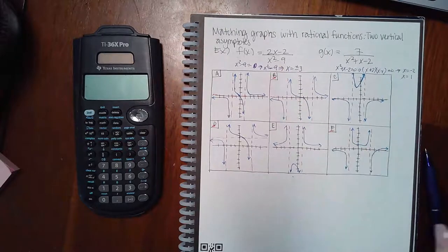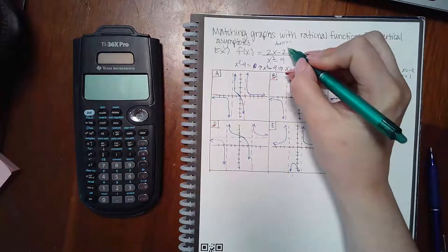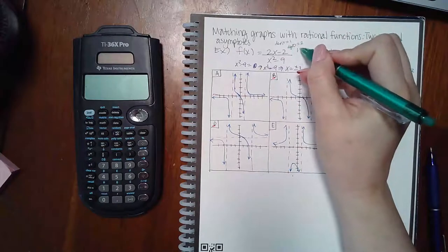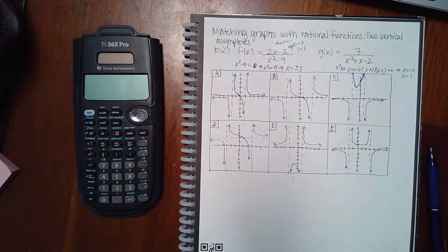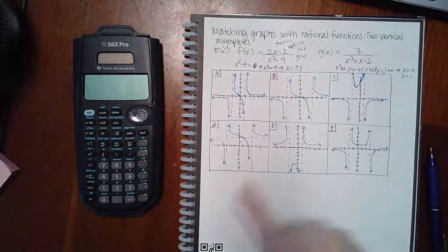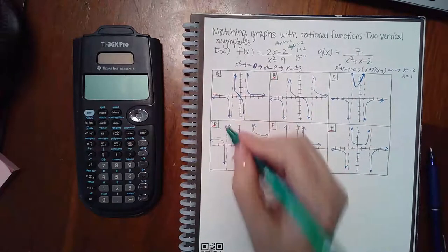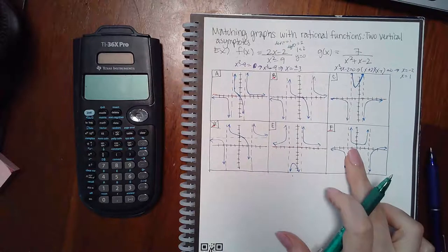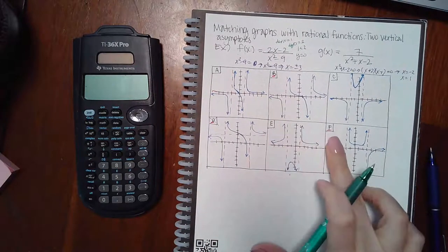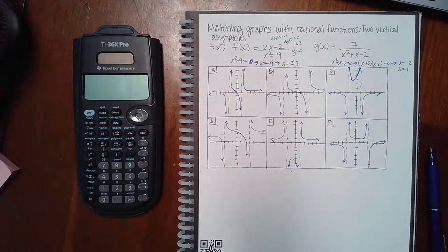Now let's look at the horizontal asymptote. The degree of the numerator is 1 and the degree of the denominator is 2, which means the numerator is less than the denominator, so the asymptote is at y equals zero. B has that asymptote, D does not, and F has that asymptote — so B and F are still contenders.